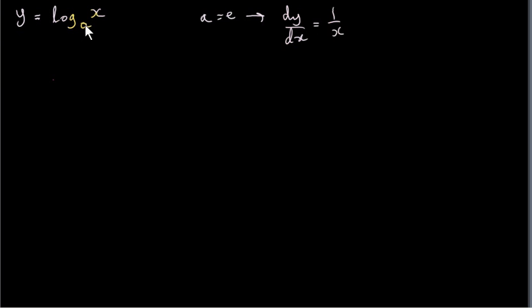So we're assuming that a is not e now. What we do is we change bases if we want to get the derivative of this function.